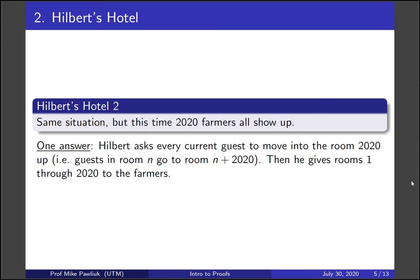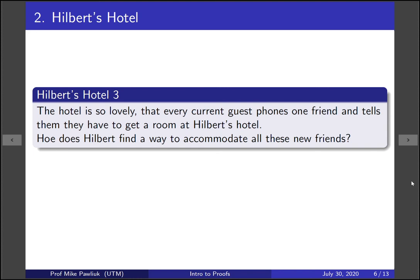All right, so this is silly and all, but let's do something even sillier. The hotel is so lovely that every current guest phones one friend and tells them to have that they have to get a room at Hilbert's hotel. How does Hilbert find a way to accommodate all these new friends? So take a moment to think about if every single person phones another friend, how can you find room for all of those people?